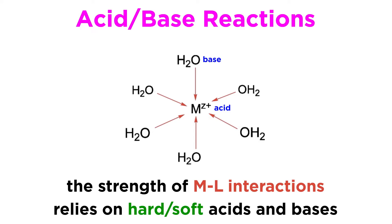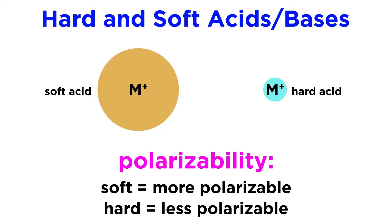In order to be able to predict the strength of metal-ligand interactions, we need to understand the concept of hard and soft. When we say that an acid or base is soft, we are referring to its polarizability. A highly polarizable atom or molecule is very soft. This means that large metal ions are soft acids — they have large electron clouds that can exhibit large momentary or induced dipoles, and are thus more polarizable.